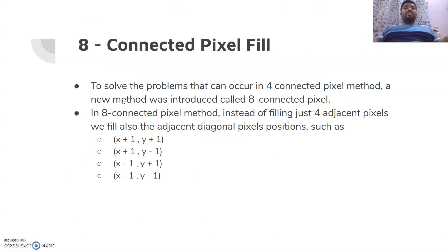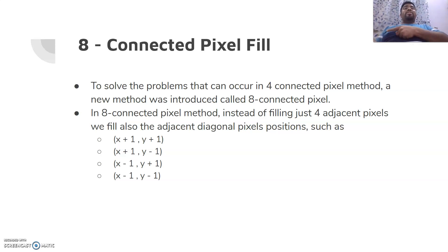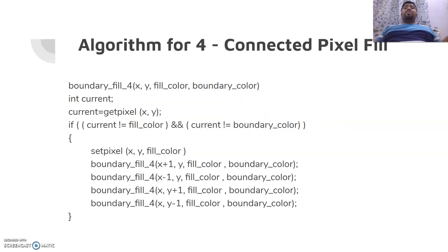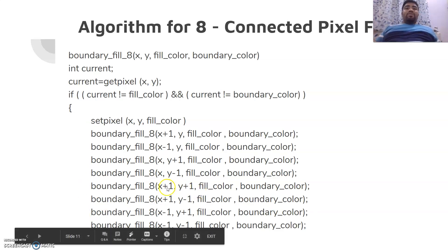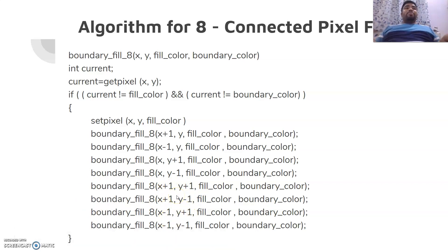So that is how we start working with eight-way connected pixel. In eight-way connected pixel we don't just process right, left, top, and bottom — we also process the diagonal ones: top-right, top-left, bottom-right, and bottom-left. The coordinates are: x+1, y+1 for top-right; x+1, y-1 for bottom-right; x-1, y+1 for top-left; and x-1, y-1 for bottom-left. The four-way algorithm is changed to incorporate four more recursive function calls for the diagonal pixels.